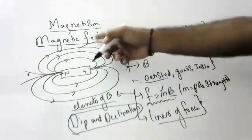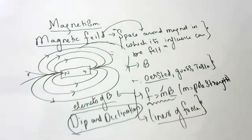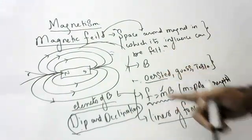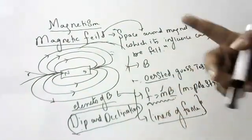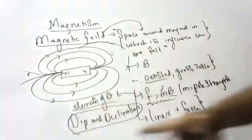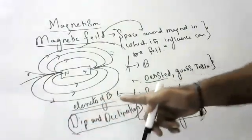So what is the definition of magnetic field? Space around a magnet in which its influence can be felt. It is denoted by B, units are oersted. Formula is F = MB. Magnetic field consists of lines of force. These lines of force will be drawn in the next video.